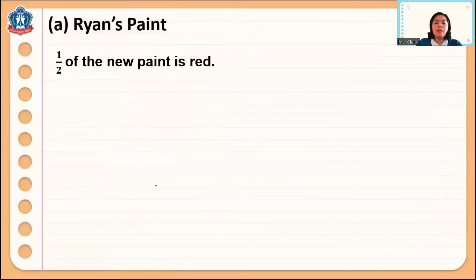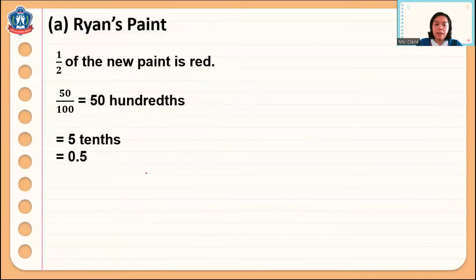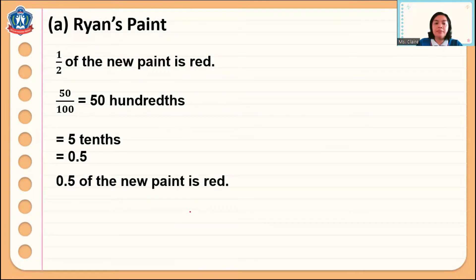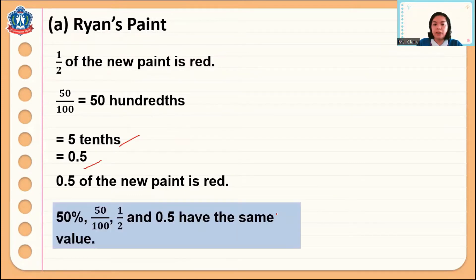So one half of the paint is red. 50 out of 100 is 50 hundredths, which is five tenths, and five tenths is equal to 0.5. So 0.5 of the paint is red. When we say 50 percent — 50 out of 100 — one half and 0.5 all have the same value.